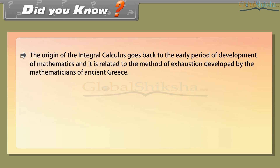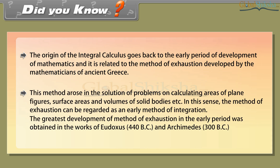Did you know? The origin of integral calculus goes back to the early period of development of mathematics and is related to the method of exhaustion developed by mathematicians of ancient Greece. This method arose in the solution of problems on calculating areas of plane figures, surface areas, and volumes of solid bodies. In this sense, the method of exhaustion can be regarded as an early method of integration. The greatest development of this method was obtained in the works of Eudoxus (440 BC) and Archimedes (300 BC).